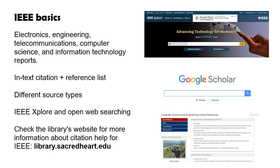IEEE Xplore is the main library database where you can find various research materials. But because certain fields evolve very quickly, you might also look to the open web, like through Google or Google Scholar, to find more current materials. Check the library's website for more information about citation help for IEEE.